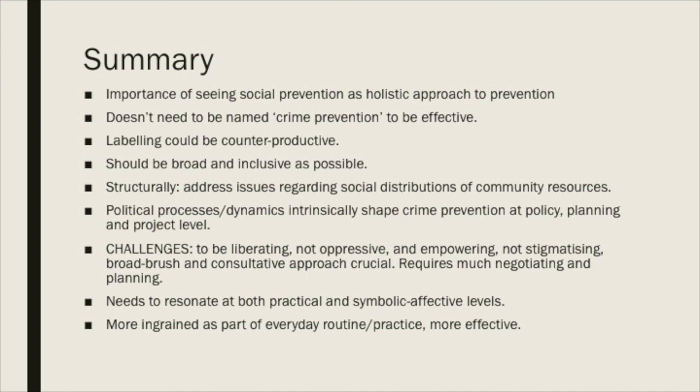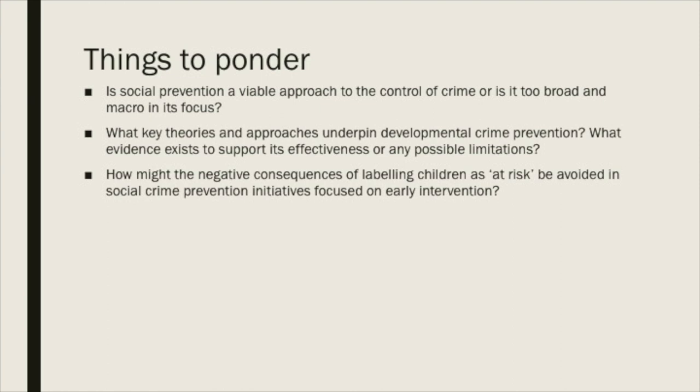There are a few questions to think about over the following week. Is social prevention a viable approach to the control of crime, or is it too broad and macro level in its focus? What key theories and approaches underpin social developmental crime prevention? What evidence exists to support its effectiveness and its possible limitations? And how might the negative consequences of labelling children as at-risk be avoided in social prevention initiatives that focus on early intervention?